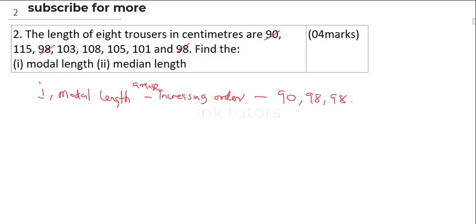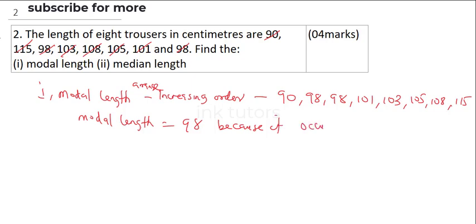The next one is 101, so I have my 101, I'm going to cancel this out. The next one is 103, I have my 103, I'm going to cancel 103 out. So I have 105, we have 108, and that's 105 and 108, then the last one is 115. With that, check which one has the highest occurring frequency, which number occurred several times, that's this. So that means modal length will be 98, because it occurs twice, it has a frequency of 2.